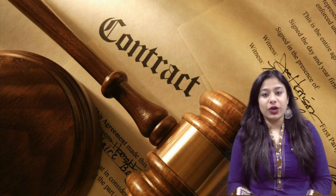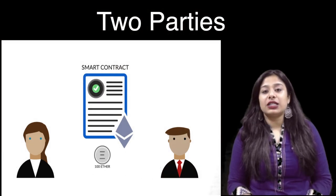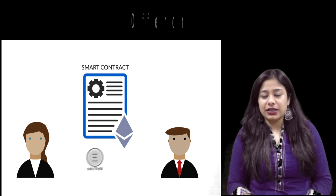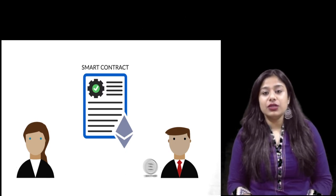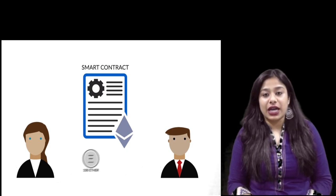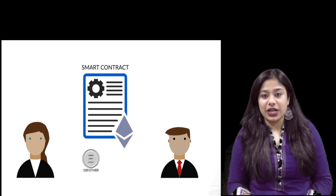The first essential is minimum two parties. Who are the two parties required to make a contract valid? The offerer and the offeree. The offerer is the person who offers to enter into a contract and the offeree needs to give his acceptance. This becomes the very first essential of a valid contract.